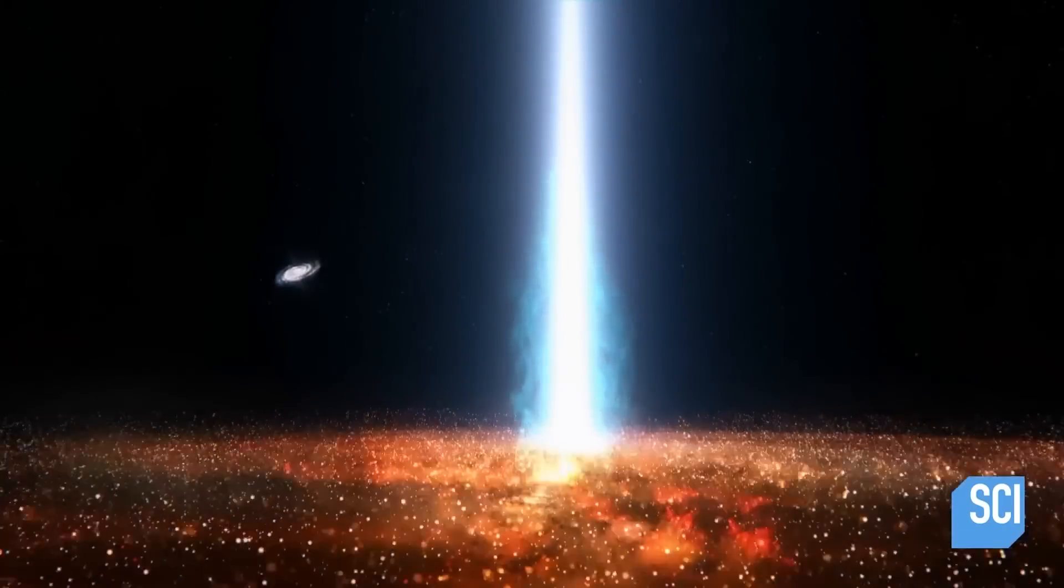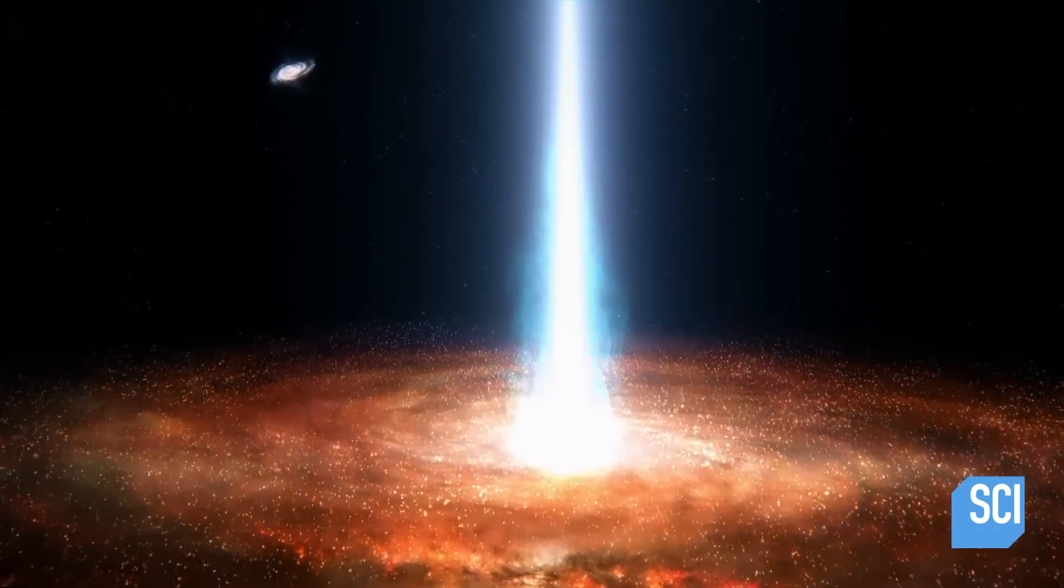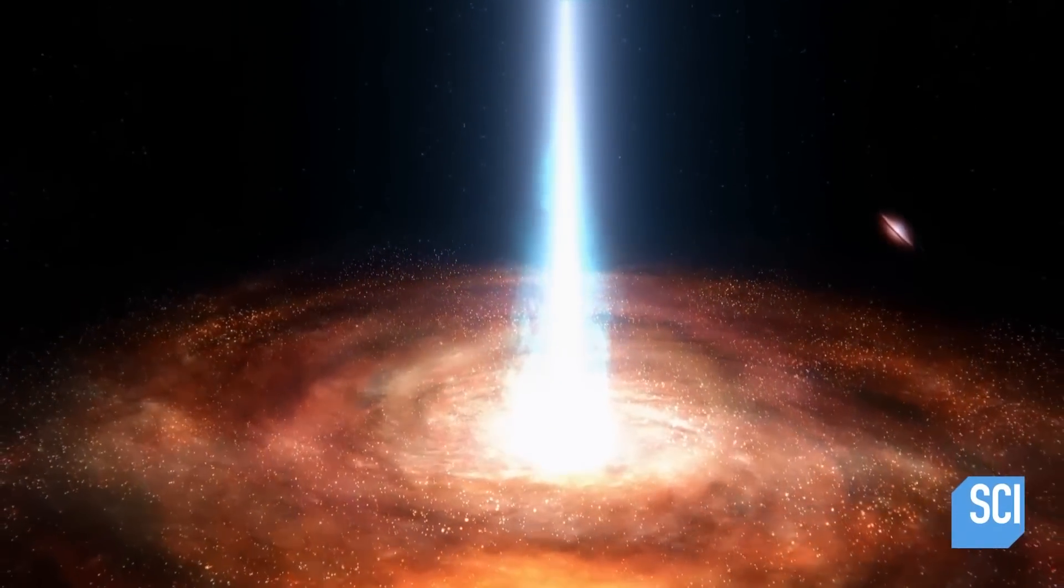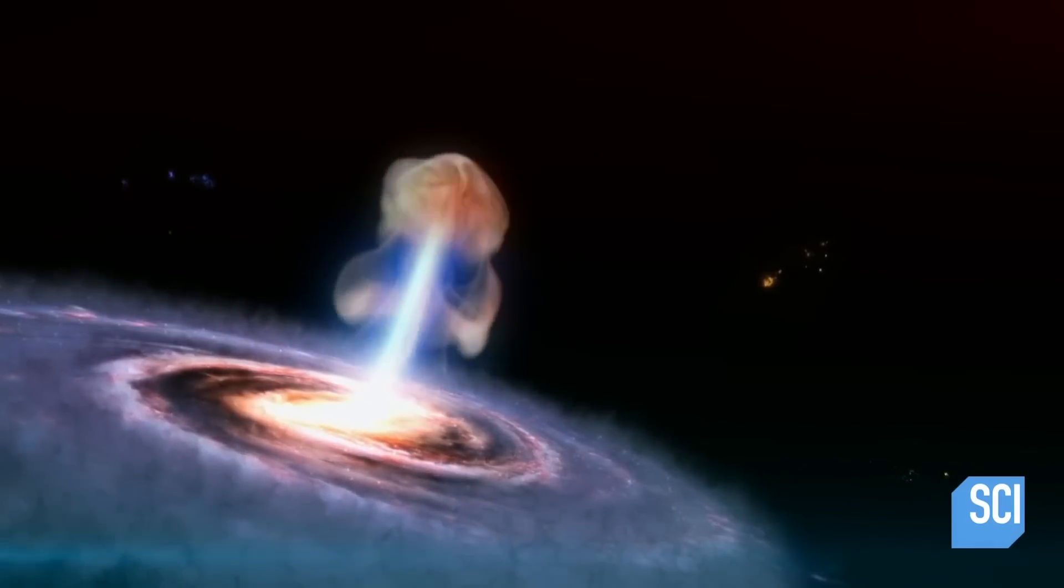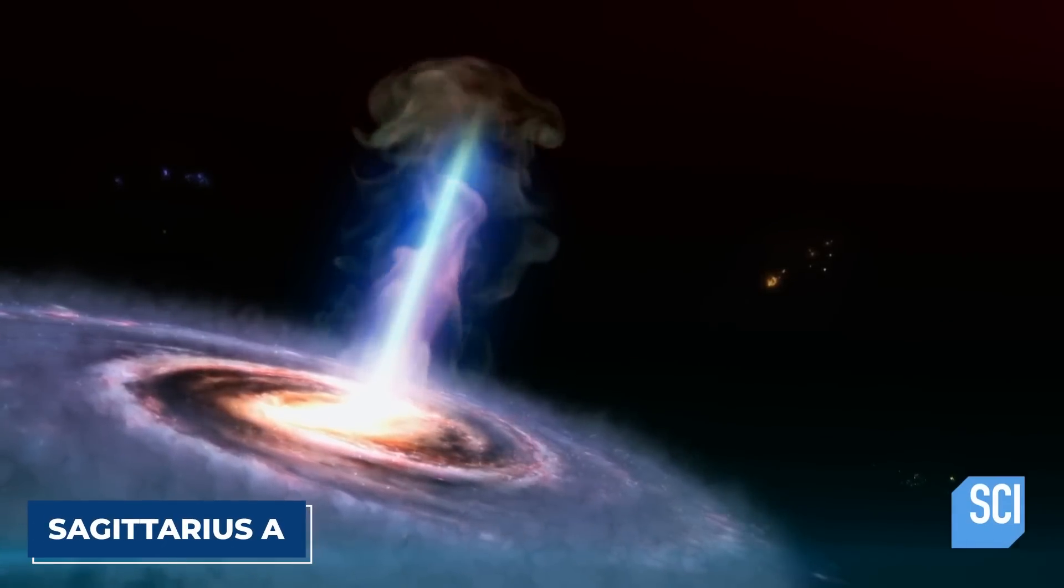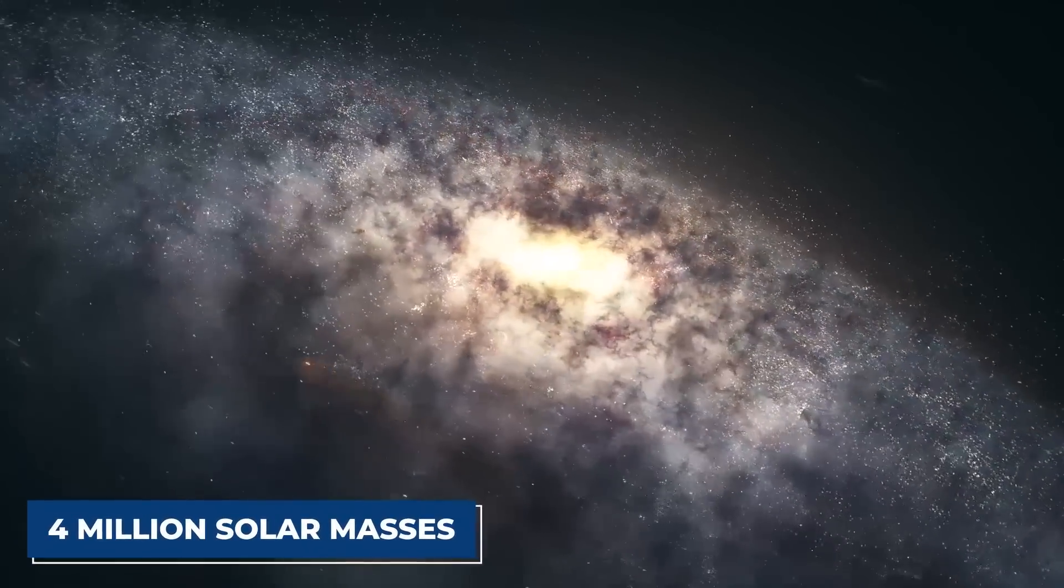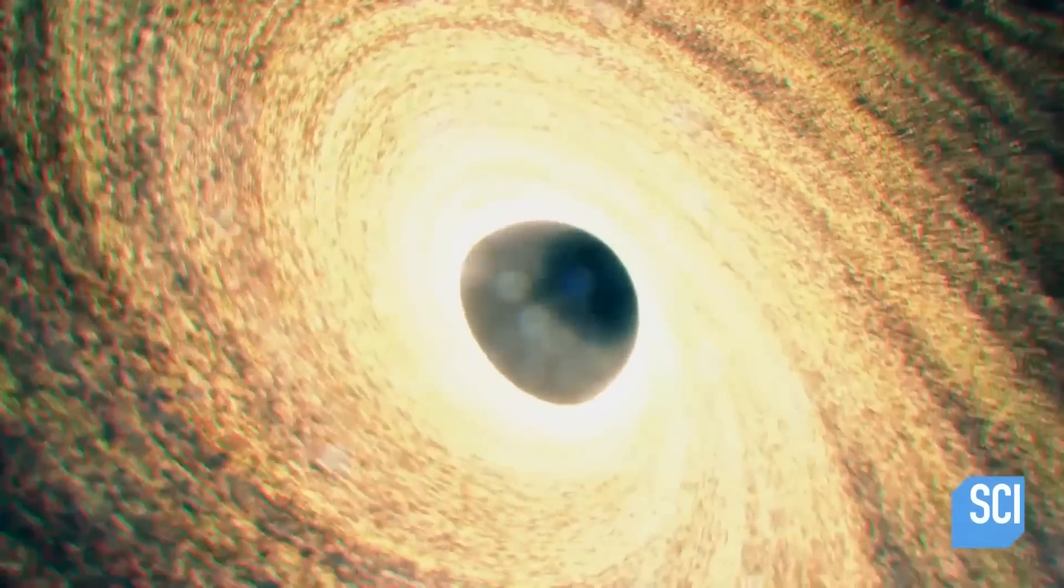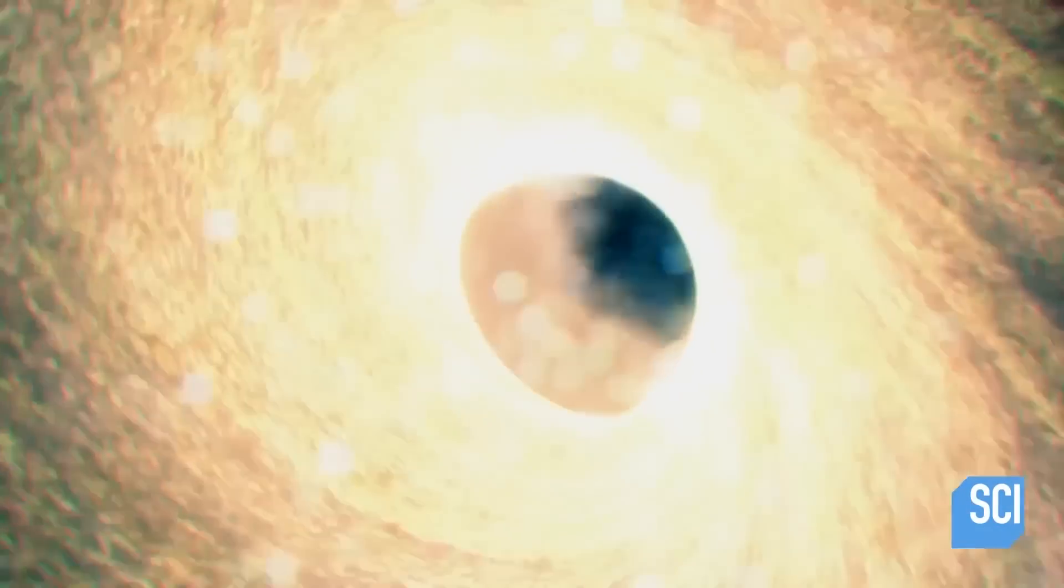Scientific evidence suggests that every large galaxy contains a supermassive black hole at its center. The supermassive black hole at the center of the Milky Way galaxy is called Sagittarius A. It has a mass equal to about 4 million suns and would fit inside a ball with a diameter about the size of the sun.